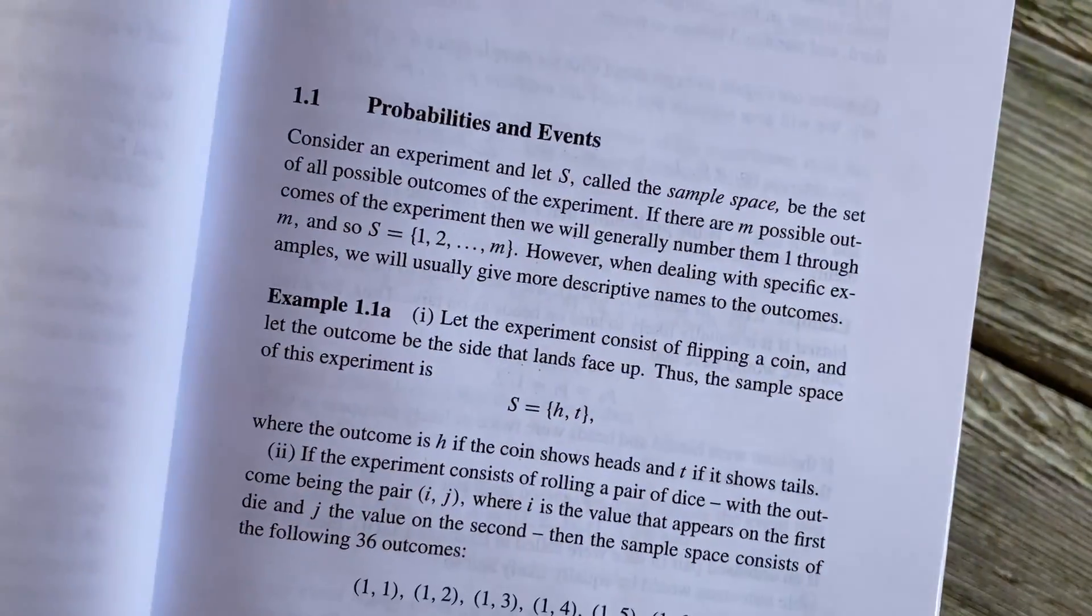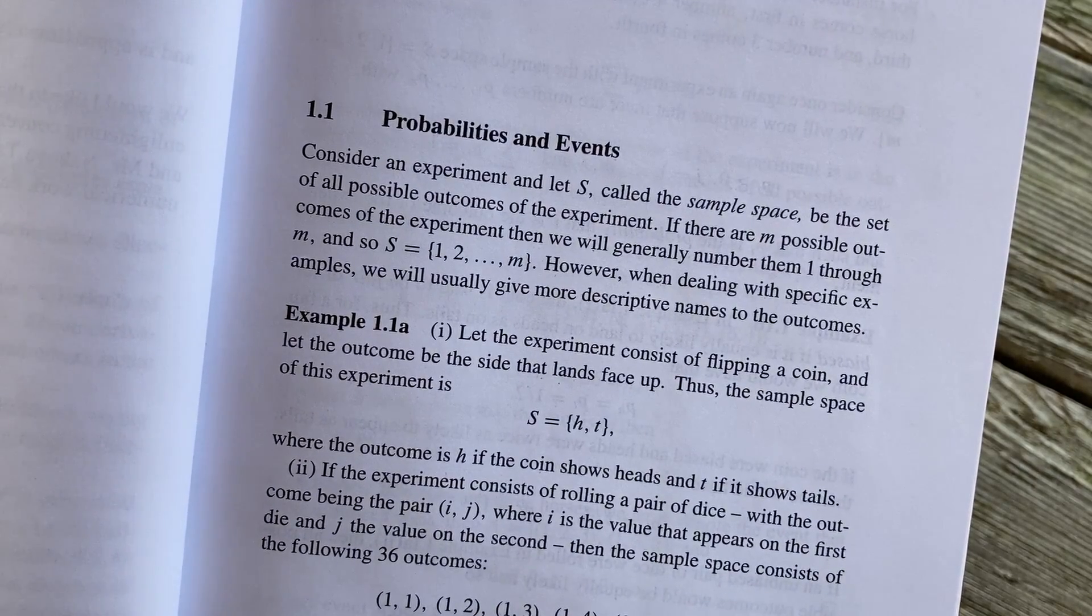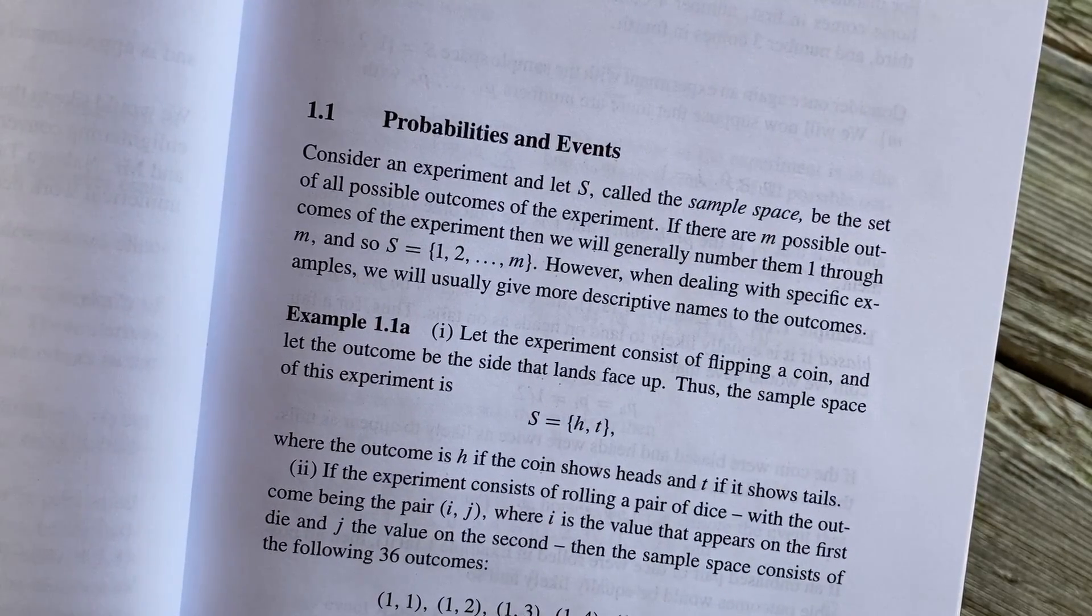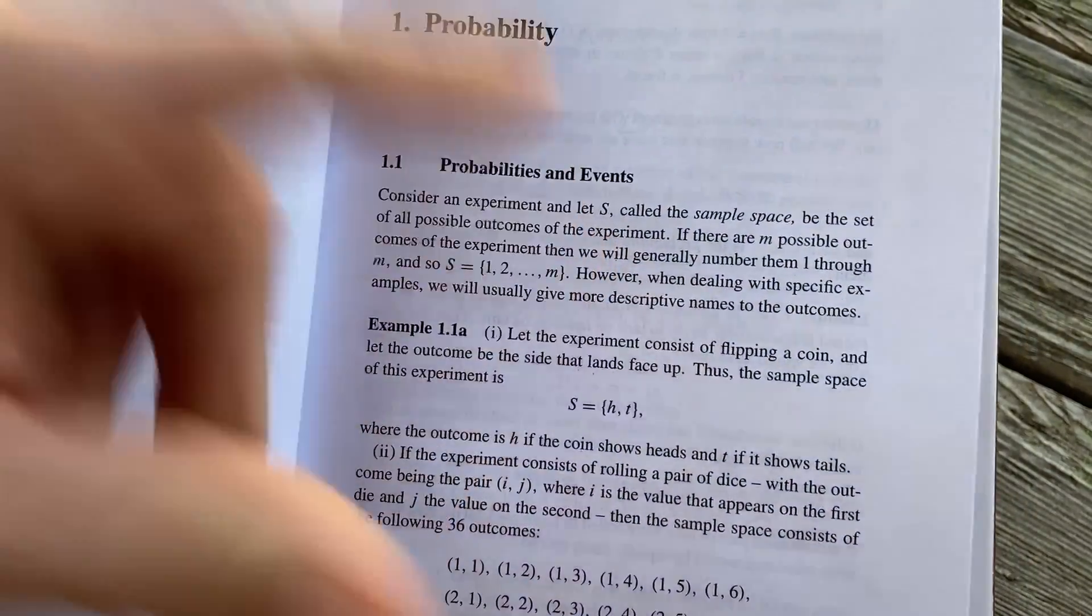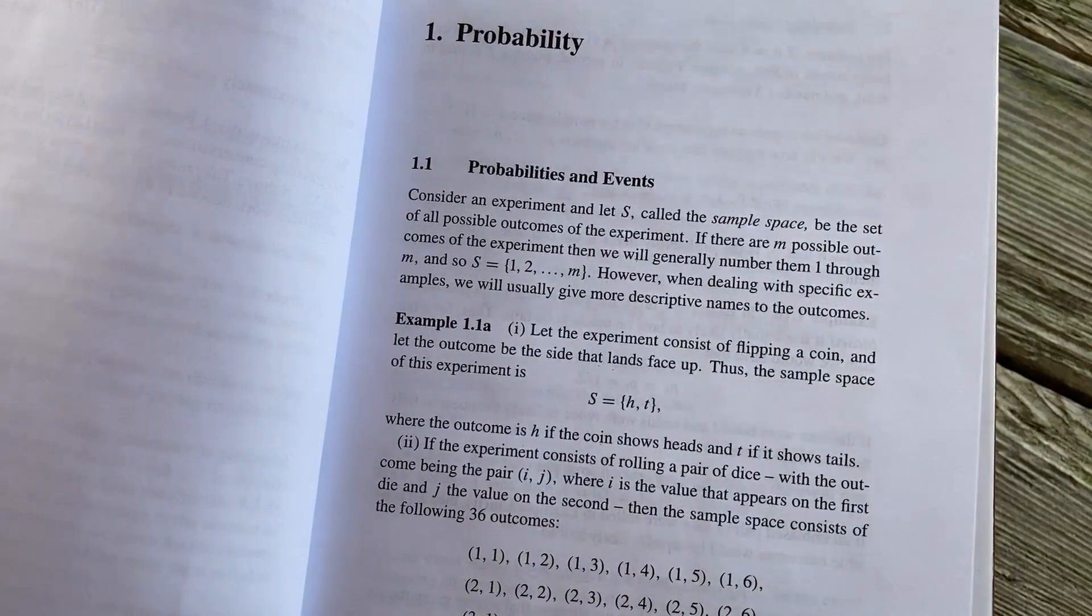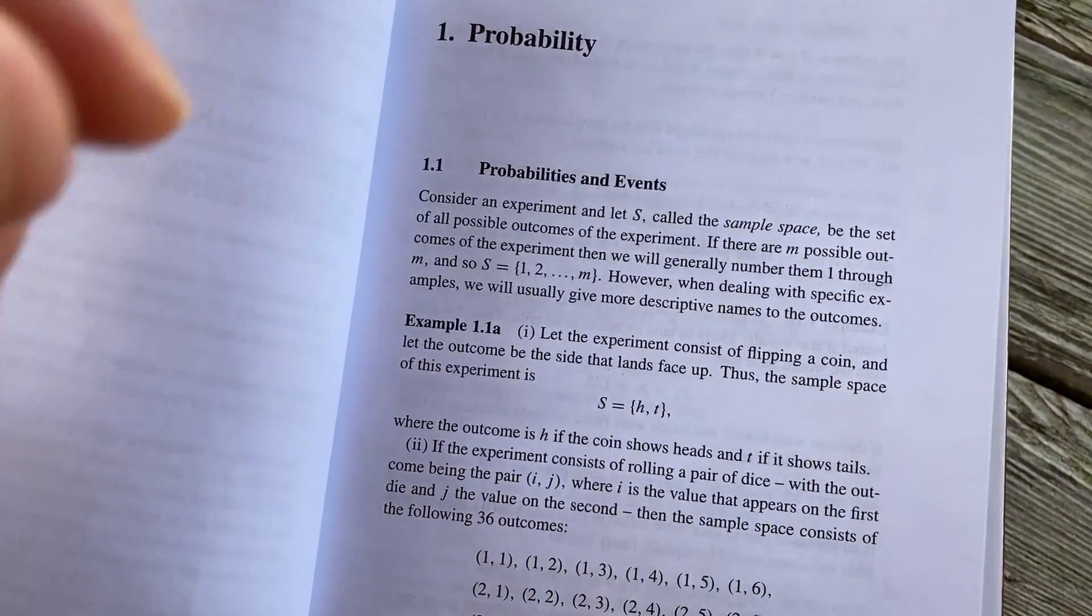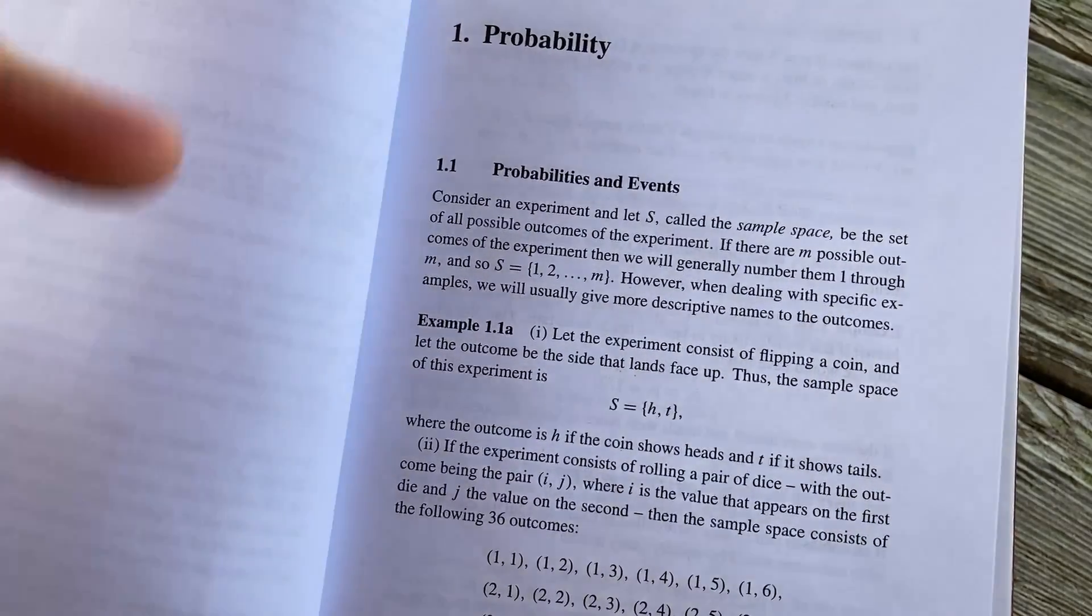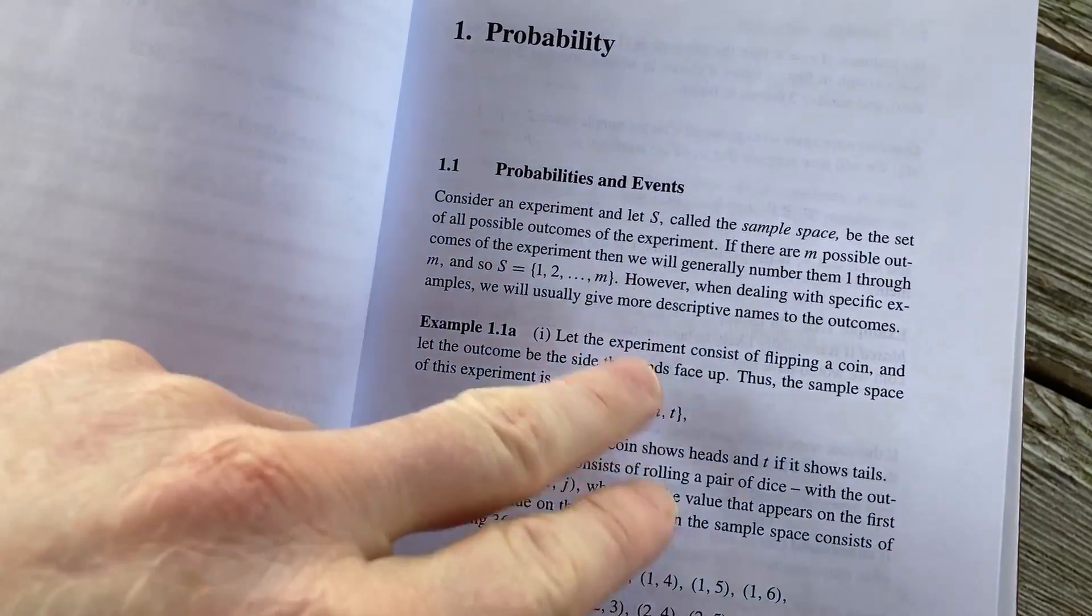So probabilities and events. Consider an experiment and let S, called the sample space, be the set of all possible outcomes of the experiment. That's typically what books use for the sample space. So for example, if you were to roll a six-sided die one time, the sample space is the set of all possible outcomes. So it would be the numbers one, two, three, four, five, and six. So you have six possible outcomes when you roll a six-sided die.